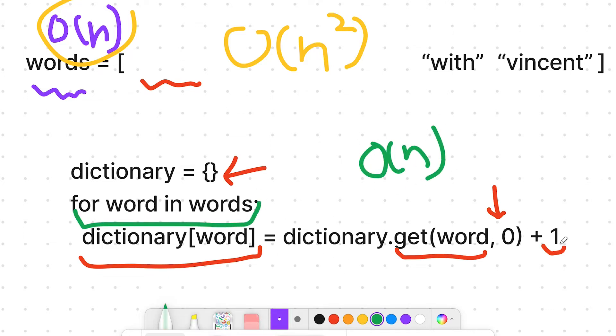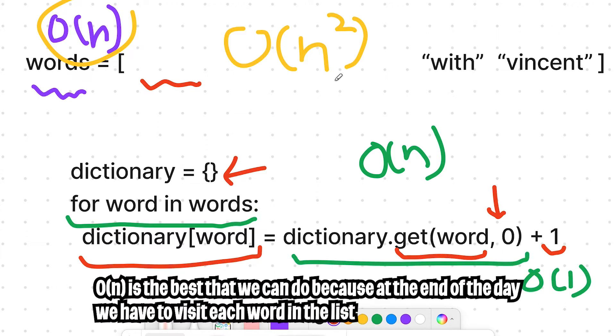Where basically we're just looping through each word. And if you remember, getting a value from a dictionary is just O of 1. So there you go. By using a dictionary, we reduce our runtime from O of n squared all the way to O of n.